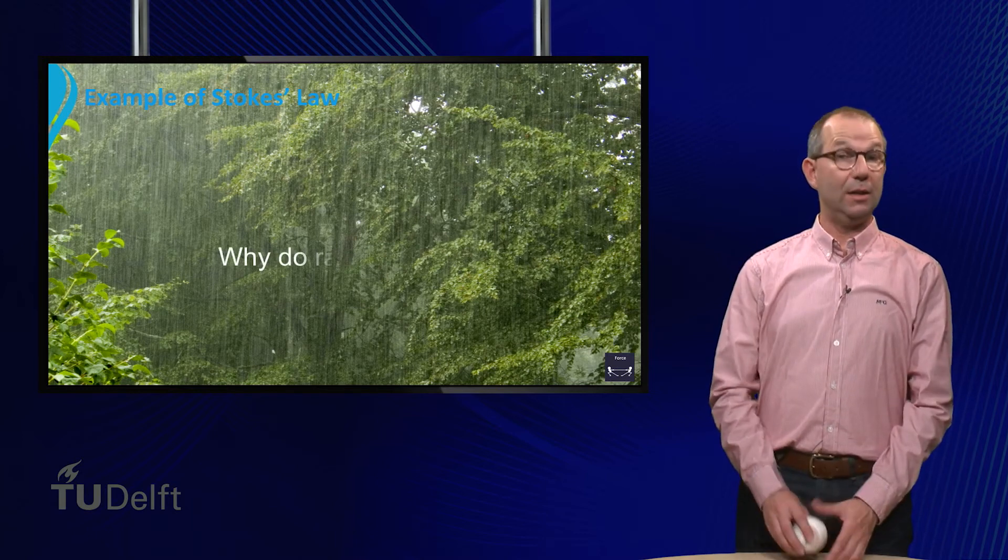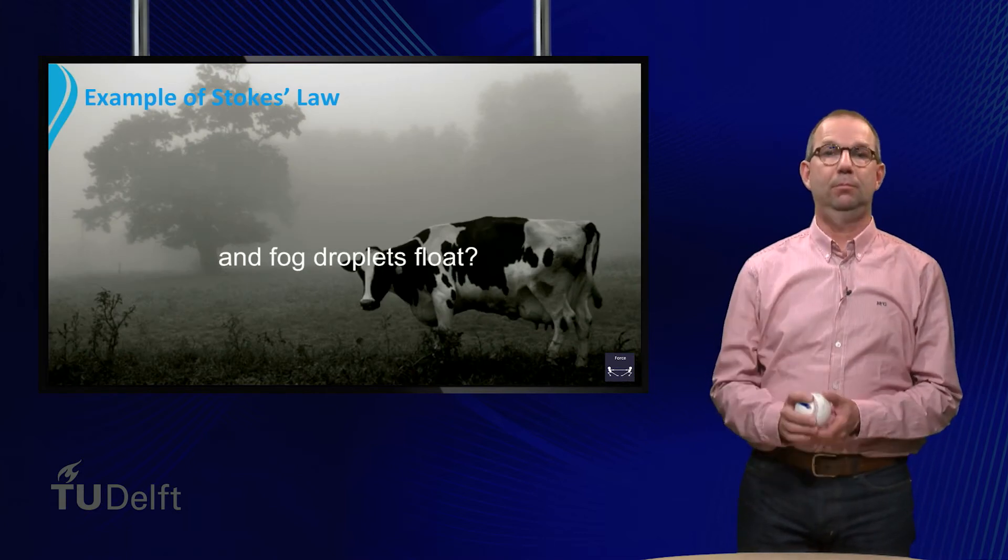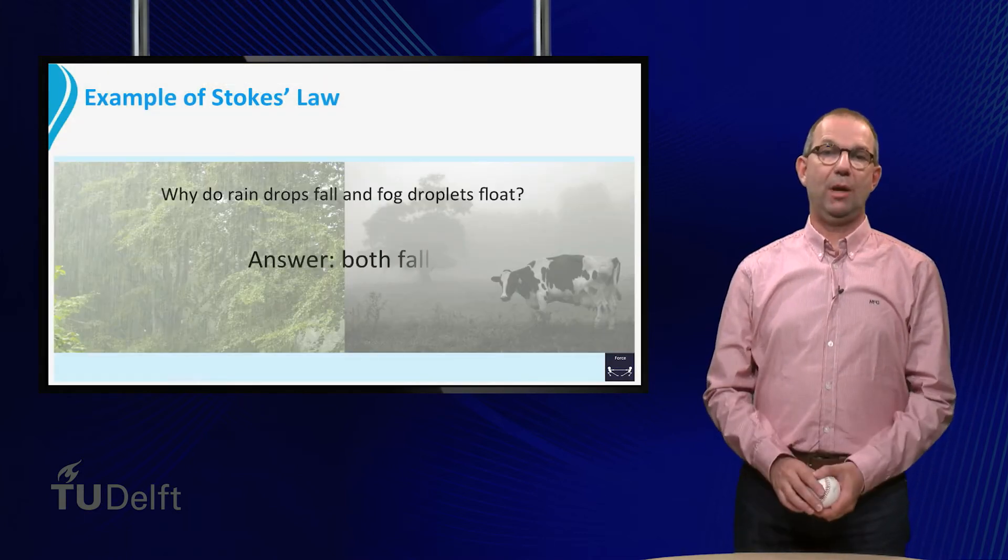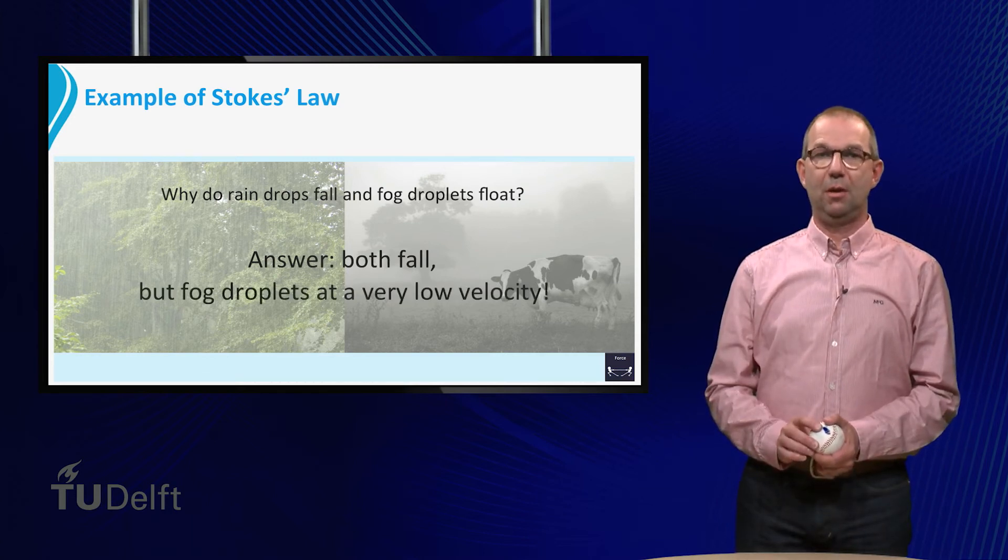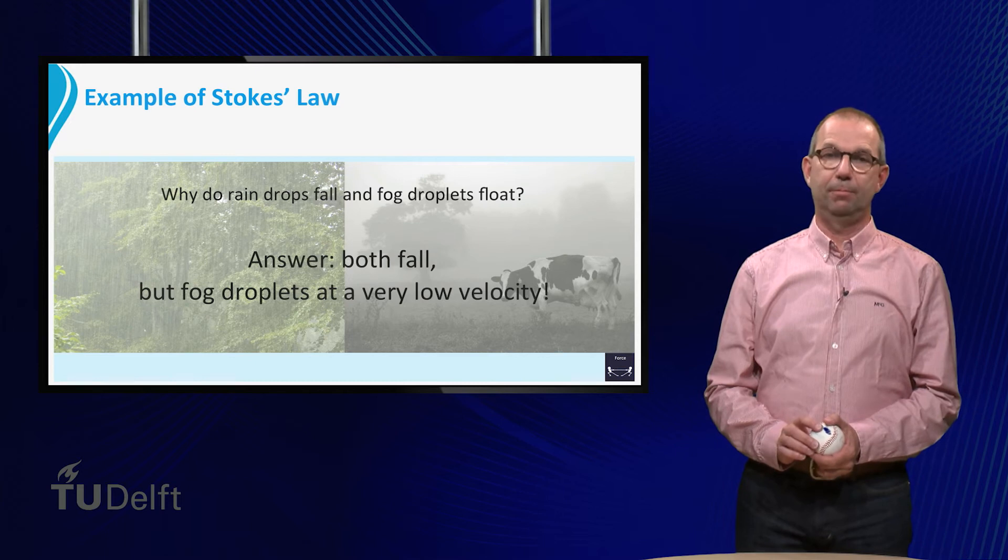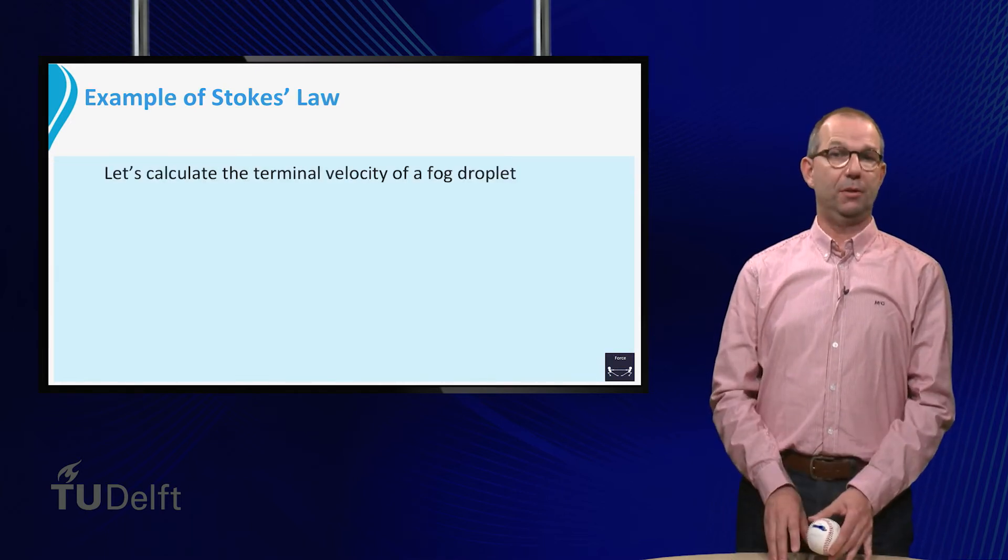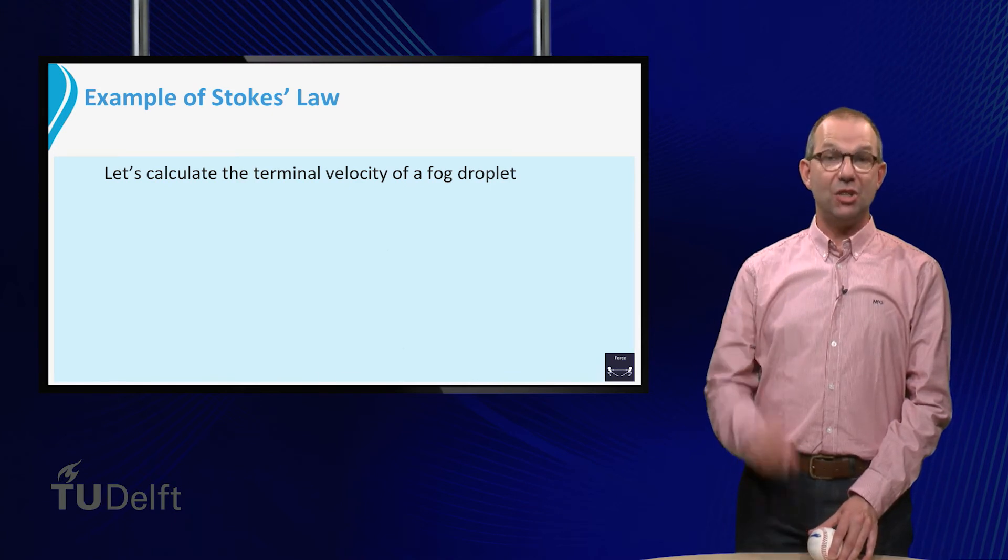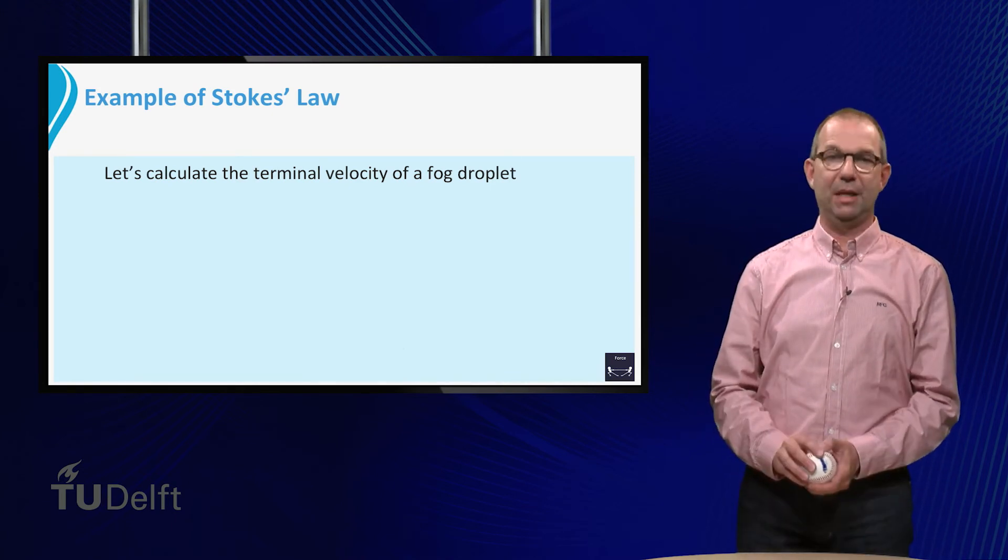Let's do an example using Stokes law. Why do raindrops fall and fog droplets float? The answer to this question is both fall, but the fog droplet with a rather low velocity. Let us calculate the terminal velocity of a fog droplet. We know that it is a tiny water droplet with a diameter of about 10 micrometers.